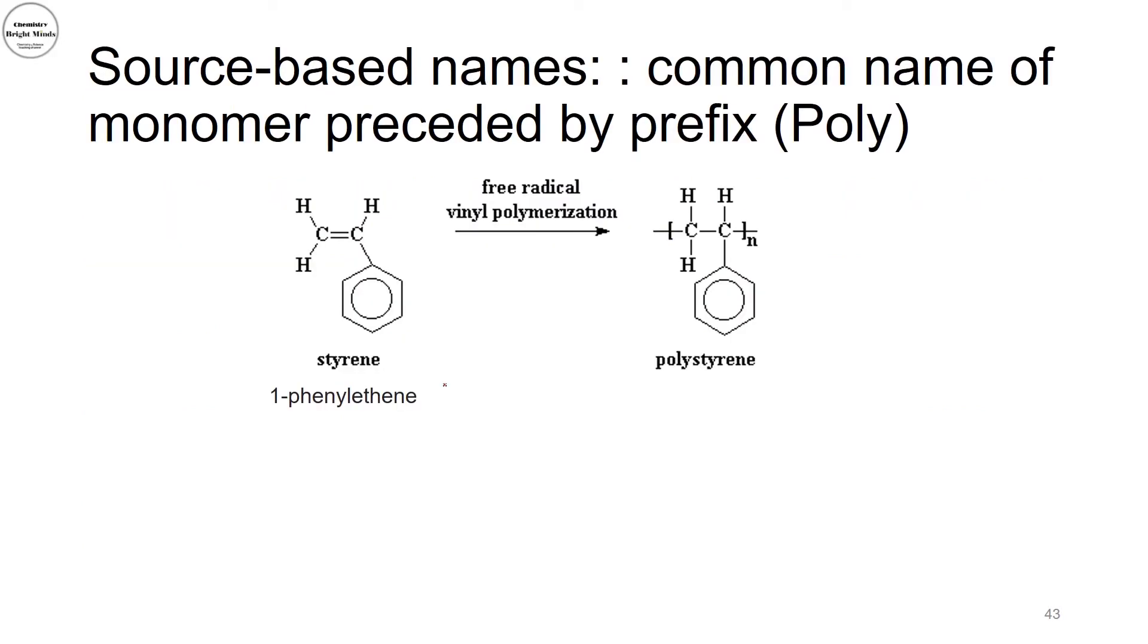Now, let's focus on the source-based names, common names of some polymers. We will precede them by the prefix poly. So if I started with something like styrene, I have 1-phenylethene. This 1-phenylethene, the common name is styrene. This is why when I form the polymer from styrene, I will just precede it by the word poly and name my polymer polystyrene.